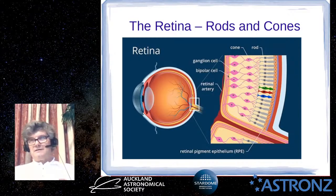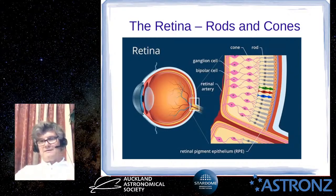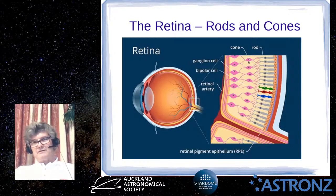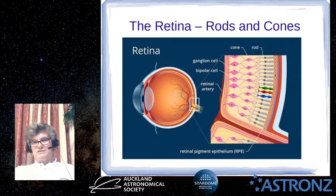This is similar to the way normal digital cameras work, though they're now moving to back-illuminated sensors where light comes in and directly hits the rod and cone cells. In the eye, in front of the rods and cones are various kinds of nerve cells that gather the information, and then a layer that attaches the retina to the structure of the eye.